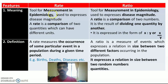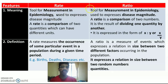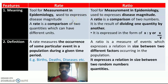First, let's look at the meaning of rate and ratio. Both rate and ratio are concepts or elements in mathematics or application of mathematics. In community health nursing, we apply both rate, ratio, and proportions as tools for measurement in epidemiology — used to express or reveal the disease magnitude or significance of disease among populations. Rate and ratio are also applied in demography.